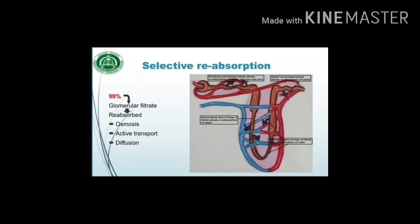The descending limb of the loop of Henle allows reabsorption of water. The ascending limb of the loop of Henle allows reabsorption of salts. The distal convoluted tubule also allows the reabsorption of water into the blood, as shown by the arrows in the diagram.